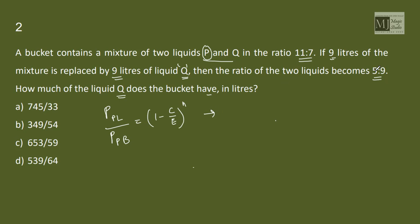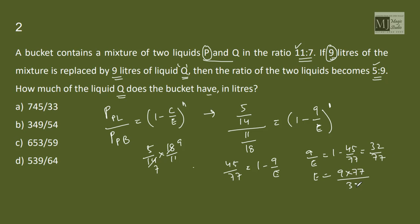So proportion of liquid P left is P is to Q 5 by 14 upon in the beginning it was 11 by 18 equals 1 minus C is the small container size that is 9. E is the big bucket size and N is number of times the process is done. Size of the bucket. Now the question is, how much of liquid Q was there in the bucket in the beginning? So Q was 7 by 18th part.